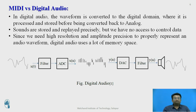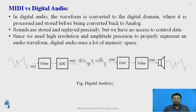So what is the difference between MIDI and digital audio? In case of digital audio, the waveform is converted into the digital domain — the analog waveform is sampled and converted into the digital domain. This digital audio is stored in memory and converted back into analog and given to the speaker, as shown in a diagram. The sounds are stored and replayed precisely, but we have no access to control the data. Since we need high resolution and precise amplitude to represent proper audio, digital audio uses a lot of memory space.